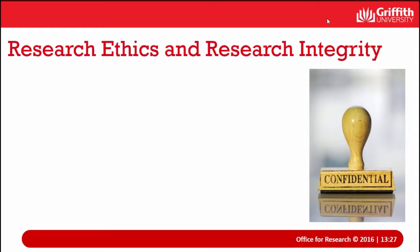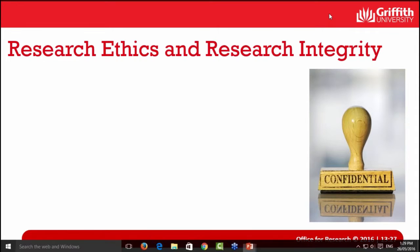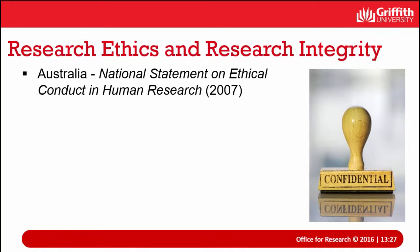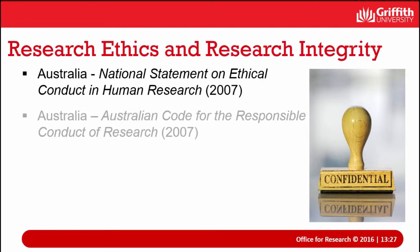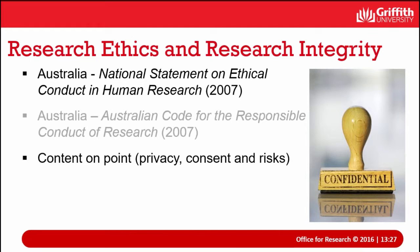When thinking about research ethics and data integrity, there are key documents to consult. Guidance on human research ethics is found in the National Statement, and research integrity guidance is in the Australian Code. Both documents address matters like privacy, consent, and risk. Currently, reviews are underway for both the National Statement and the Australian Code.